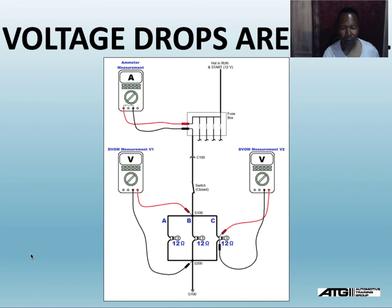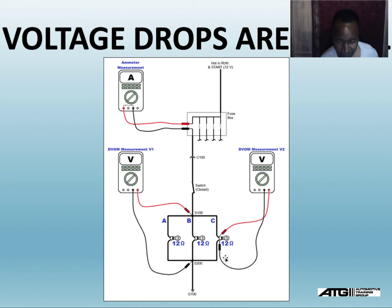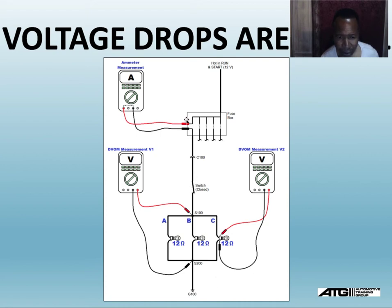Now let's look at the voltage drop. You can see here I have the red lead hooked on one end and the black lead hooked up to the other end — that's a voltage drop across this load. A voltage drop basically means how much voltage is being used to operate this load. The current leaves the battery through the fuse, down through the switch, and divides among each resistor.